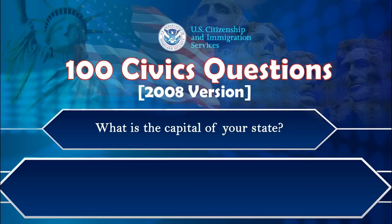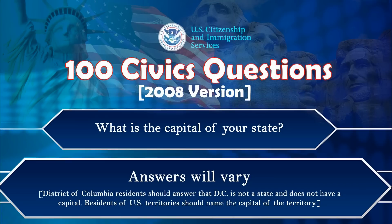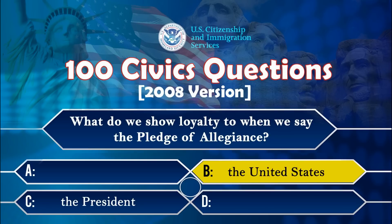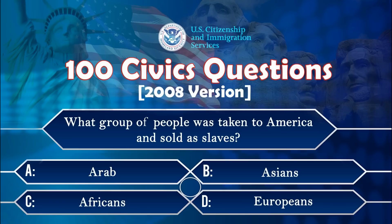What is the capital of your state? Answers will vary. Please check the link in description. What do we show loyalty to when we say the Pledge of Allegiance? The United States. What group of people was taken to America and sold as slaves? Africans.